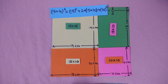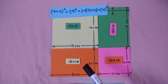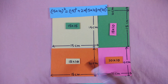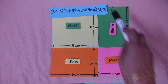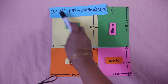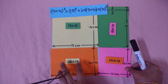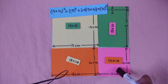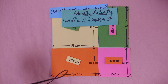So what do you observe here? This whole 25 by 25 square piece is made up of: a 15 by 15 square piece, then 2 pieces of 15 by 10 rectangular pieces, and 1 piece of 10 by 10 square piece. That 25 squared piece equals 15 squared plus 2 pieces of 15 times 10 plus 1 piece of 10 squared.